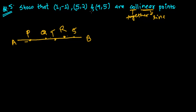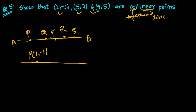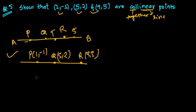How to prove that points are collinear is another important matter. We are given three points. Let me draw: suppose this is point P at (1, -1), point Q at (5, 2), and point R at (9, 5). If P, Q, R lie like this on a line, we can say they are collinear.